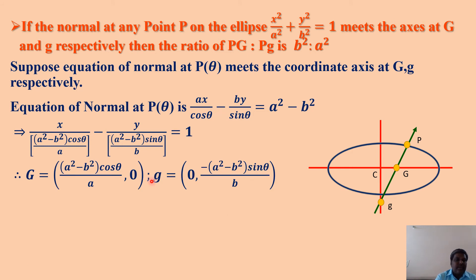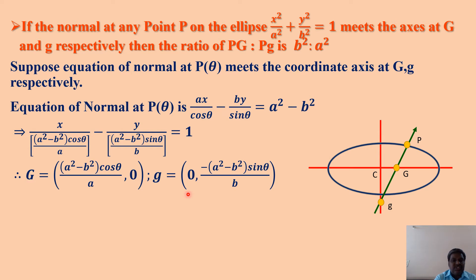So capital G equals ((a²−b²)cosθ/a, 0) and the coordinates of small g are (0, −(a²−b²)sinθ/b). The x-intercept comma 0 gives the coordinates of G, and 0 comma y-intercept gives the coordinates of small g. So we have the coordinates of both small g and capital G. Point P is (a cosθ, b sinθ).